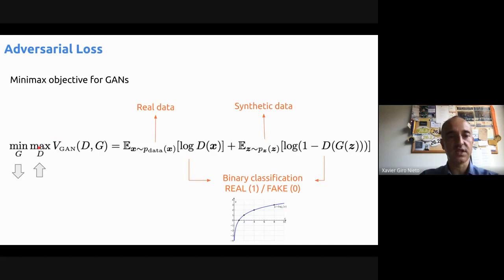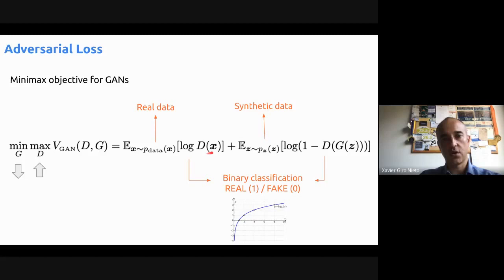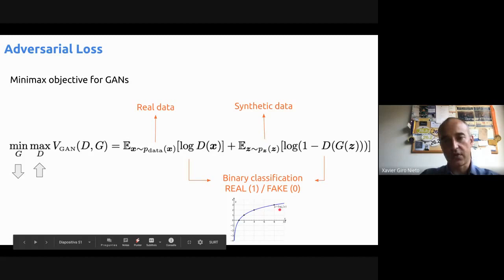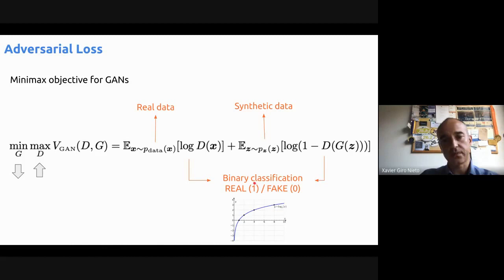Let's focus on the discriminator first. When we are sampling data from the real data distribution — P data means the real distribution — the discriminator will try to maximize this part. It will try that the output of the discriminator is high. There's a log, but log is an increasing function. So we want it to be large, and the discriminator will try to predict a one.